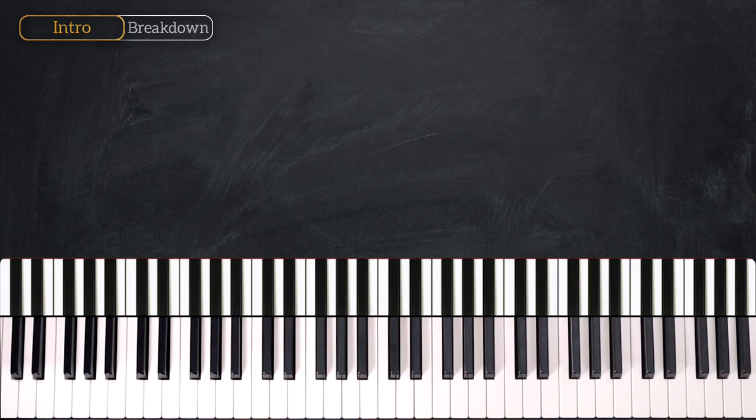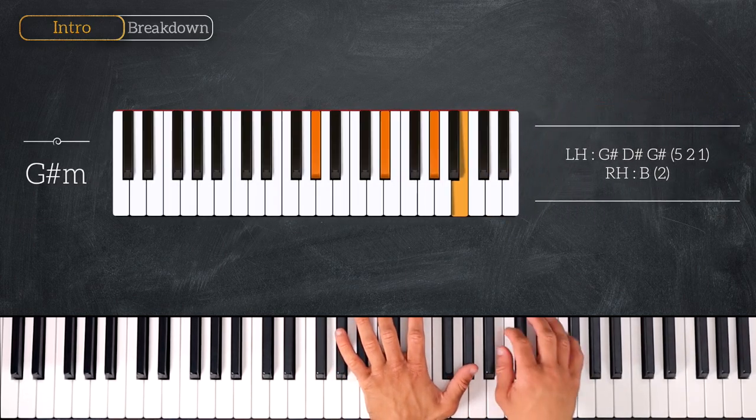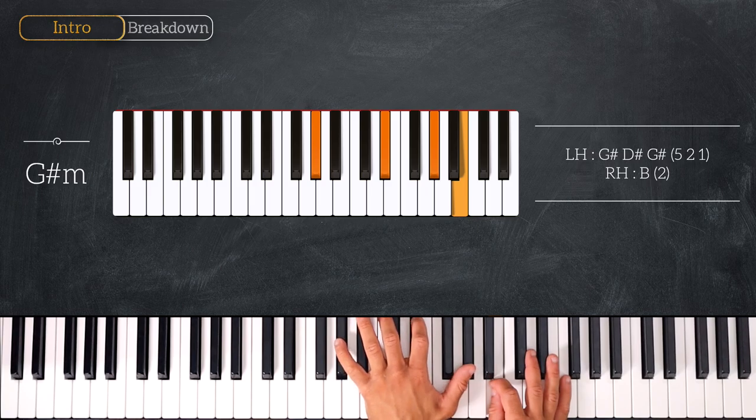Here is the chord progression. We'll start by playing a G sharp minor chord, just like this. So we have G sharp, D sharp and G sharp on the left and B on the right hand.